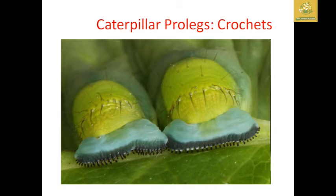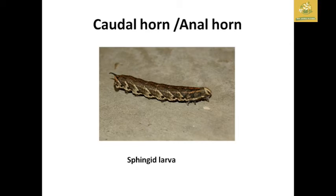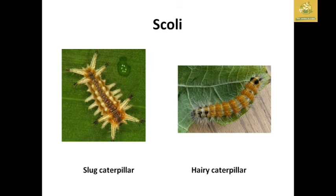Urgomorphae is the ninth tergum found in the red flour beetle, forming a U-shaped structure in the ninth abdominal segment. The caudal horn or anal horn is mainly found in sphinx moth larvae at the last abdominal segment. Scoli are found in slug caterpillars and hairy caterpillars — they are spine-like structures on the body surface of the abdomen.